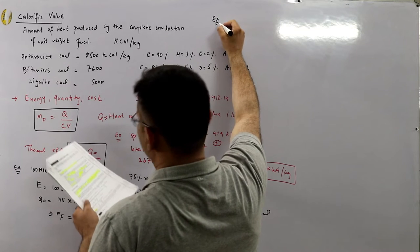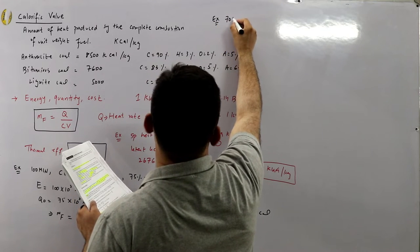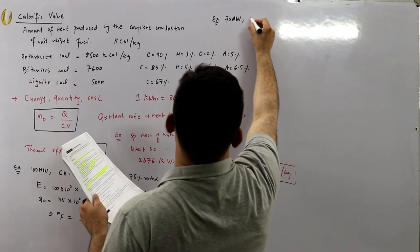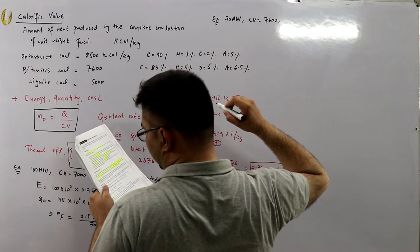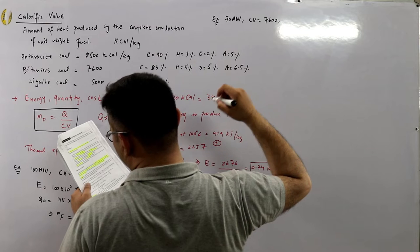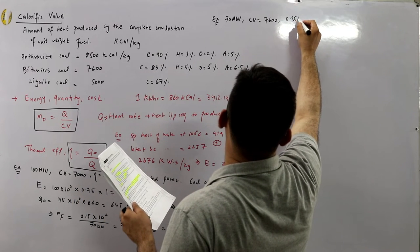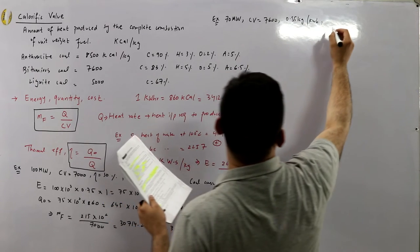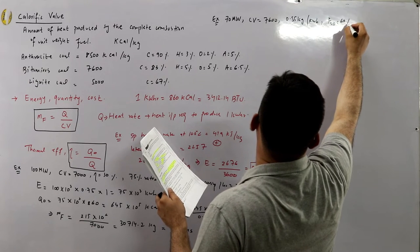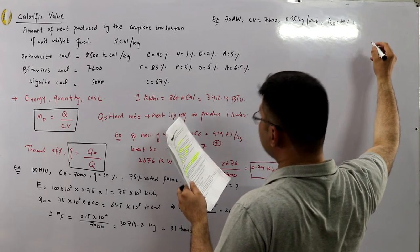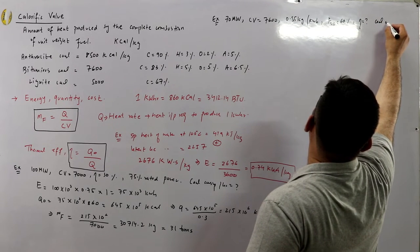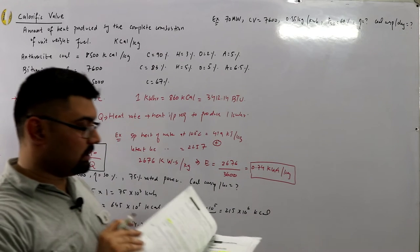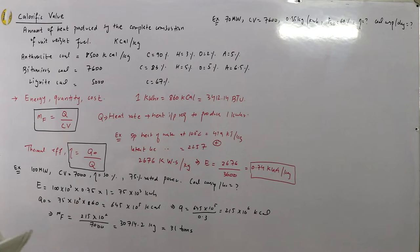Example 2: A 70 MW coal-fired thermal power station uses coal of calorific value 7600 kilocalories per kg, consumed at a rate of 0.55 kg per kilowatt hour. The station operates at a load factor of 60%. Calculate the efficiency and coal consumption per day.